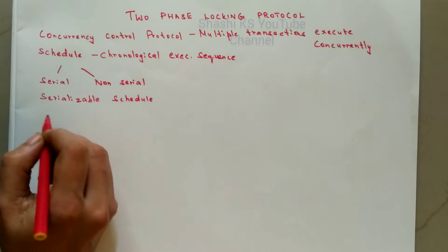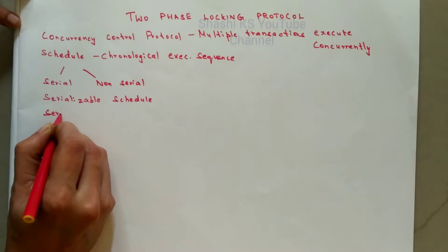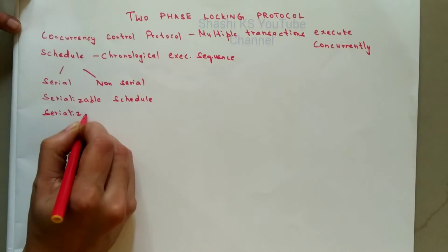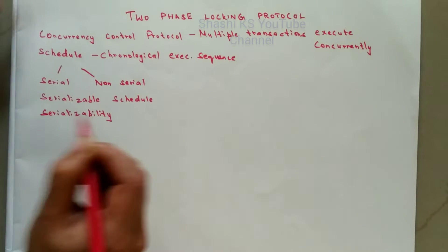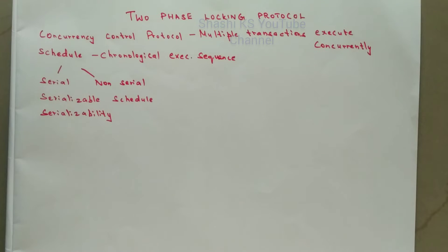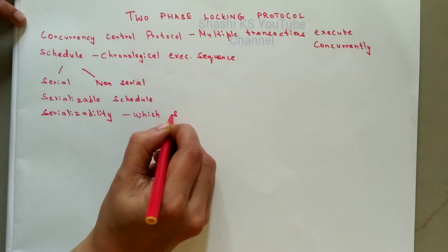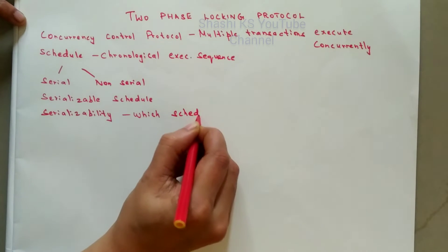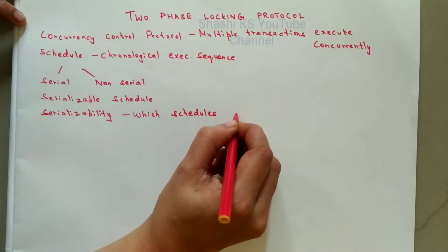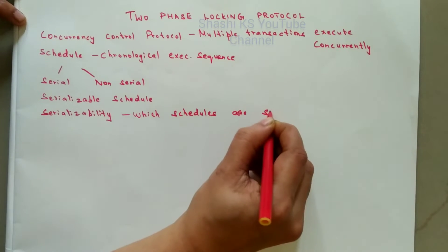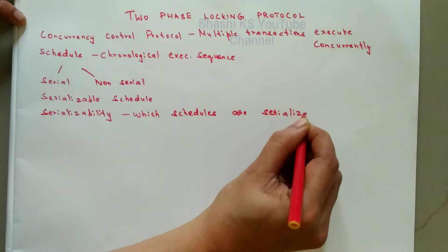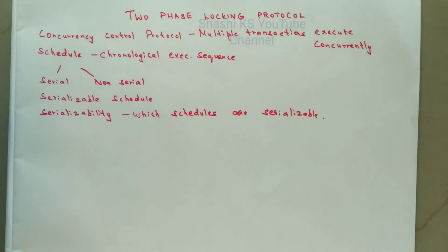Serializability is a concept which helps us to check which schedules are serializable. A serializable schedule is one which will always leave the database in a consistent state.